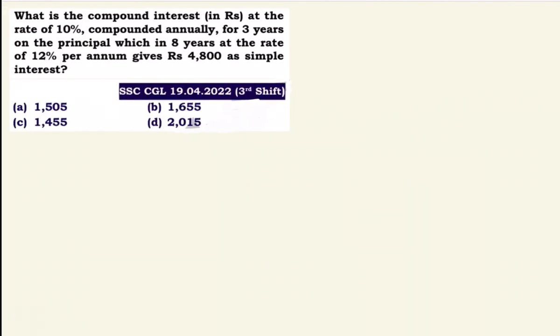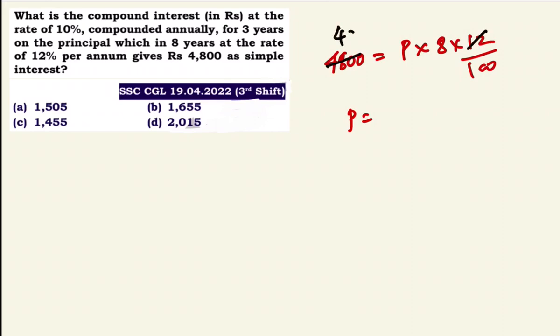Next question: What is the compound interest at the rate of 10% compounded annually for 3 years on the principal which, in 8 years at 12% per annum, gives Rs.4,800 as simple interest? Using the SI formula, principal equals Rs.5,000.